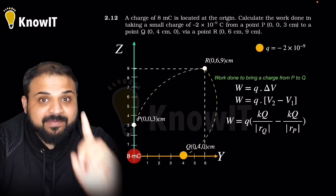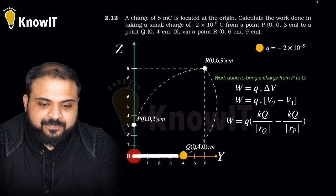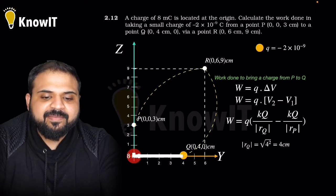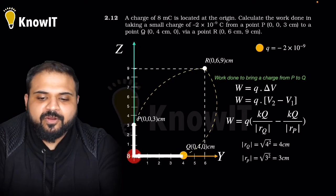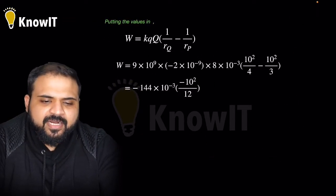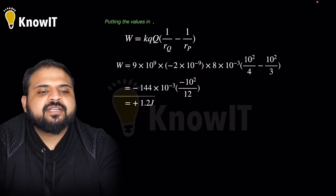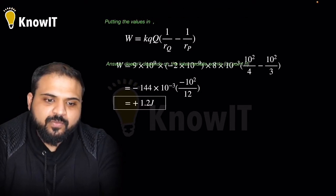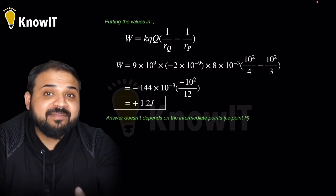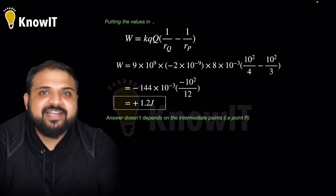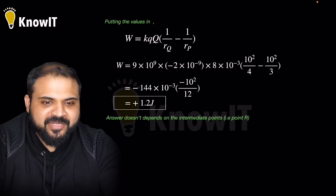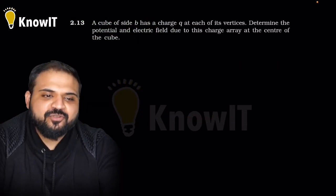We'll put values into the formula. The distance r_Q will be 4 centimeters and r_P will be 3 centimeters. Now keeping everything into the formula, you'll be getting around 1.2 joules. So this much work done we have to do, and the answer doesn't depend on the intermediate point R. No matter how many points come, the answer won't depend on them.